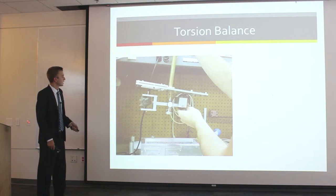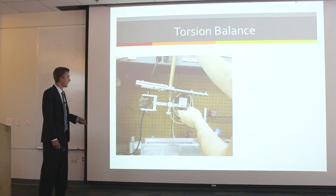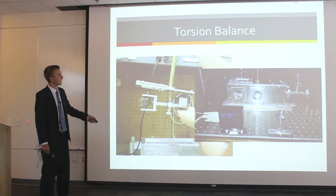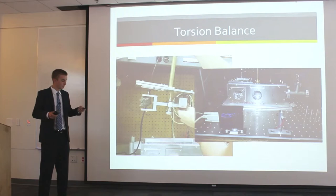We measure how much deflection we get when we shoot the laser at the material by using a second, commercially available laser that we shoot off a mirror. The second laser comes back into a beam detector, so when we get movement, we detect how much movement we get.